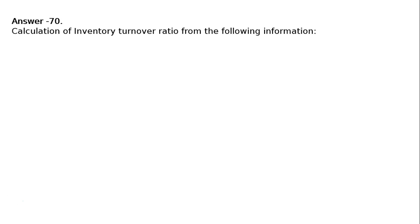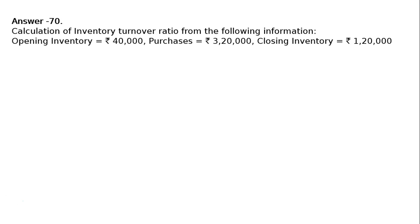Question 70: Calculate the inventory turnover ratio from the following information. Opening inventory rupees 40,000, purchases rupees 3,20,000, closing inventory rupees 1,20,000. State giving reasons which of the following transactions would increase, decrease, or neither increase nor decrease the inventory turnover ratio. Part A: sale of goods for rupees 40,000, cost rupees 32,000.